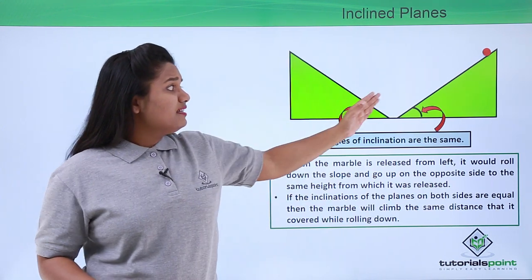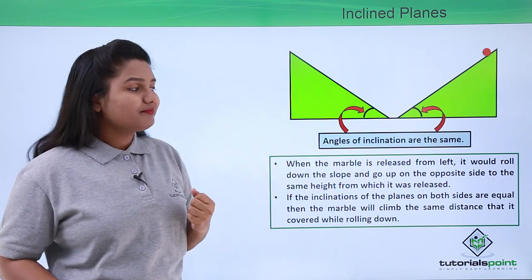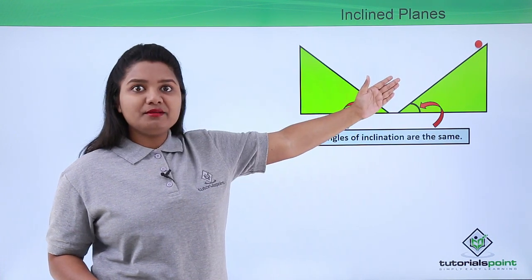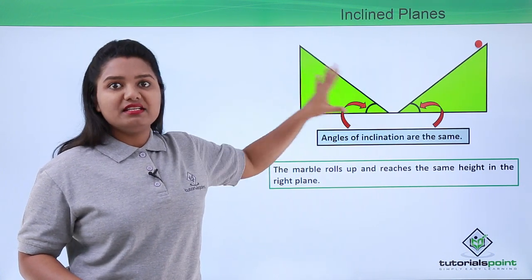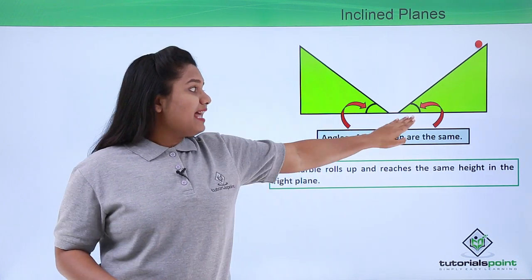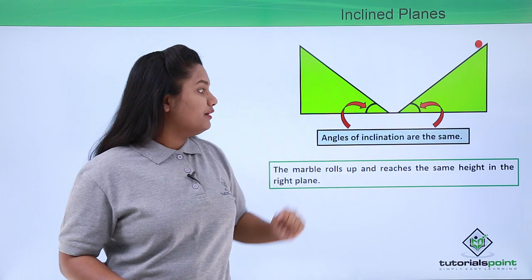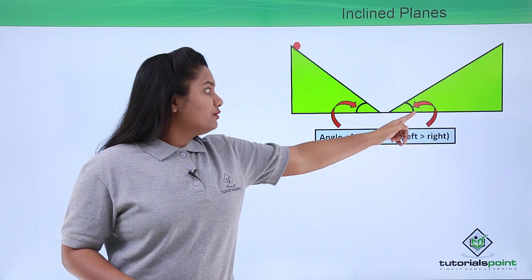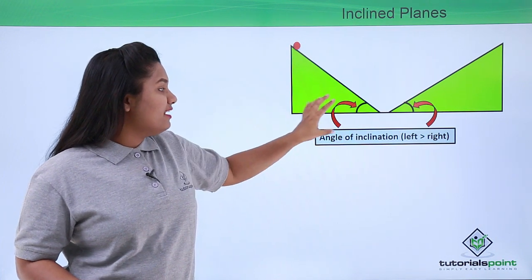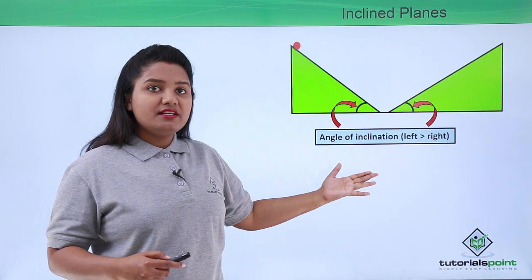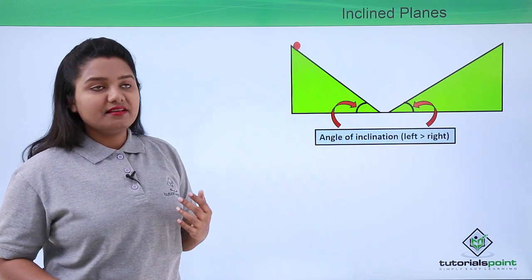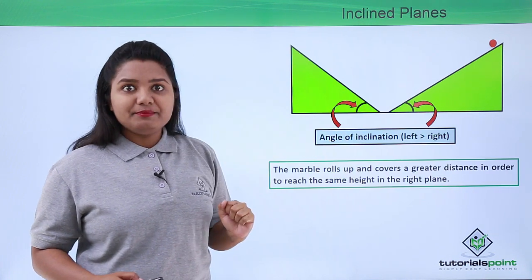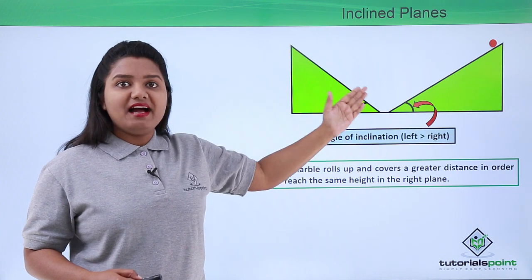Now we can vary these angles and study what happens. When we reduce the angle on the right-hand side — so the left angle is now greater than the right — the marble still rolls down and climbs the right-side inclined plane, and even in this case it reaches the same height on that side.